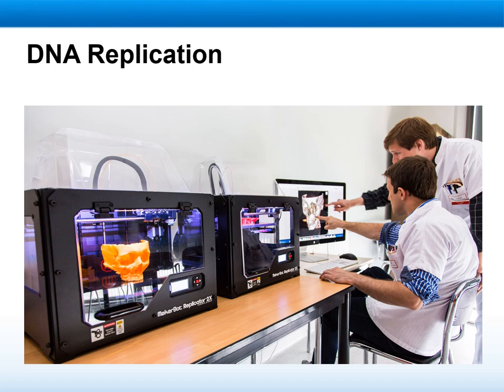Welcome dear students to week 2. In this week we will continue talking about genetic information, DNA, and how it's replicated. As we understood earlier, DNA is the genetic information carried from parents to offspring. While this genetic information is transmitted to offspring, it has to go through a process — one of those processes is called DNA replication, meaning copying or making an extra copy of DNA.